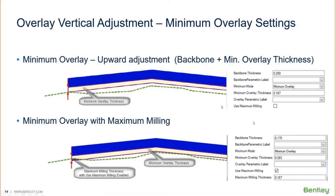Finally, we can also utilize the use maximum milling option where we could say we want to mill out two inches, have a minimum of one inch of overlay, and a backbone thickness of maybe two inches. It would take all that into account and make that adjustment — mill out the two inches, add in the one inch of overlay thickness, and then add in the backbone thickness to make the adjustment upwards for the adjusted profile grade line.